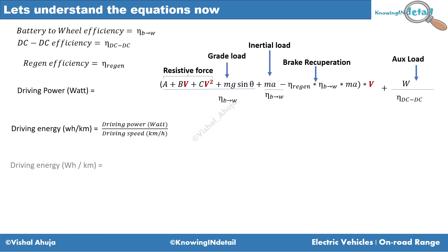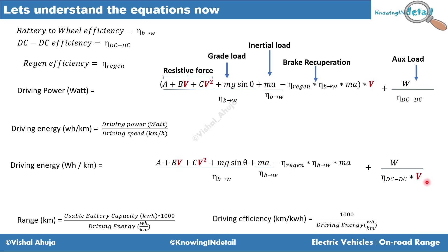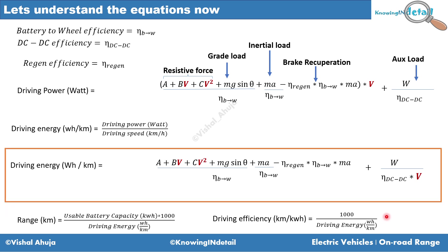You can define driving energy in terms of watt-hours per kilometer by dividing driving power by average driving speed v. The equation gets modified and the v term comes into the denominator. The range is then calculated as usable battery capacity divided by driving energy per kilometer. Similarly, km/kWh efficiency is 1000 divided by that driving energy term. This equation is very important and intuitive to work with.